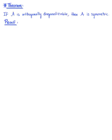This next theorem is going to help us identify the conditions under which a matrix is orthogonally diagonalizable. This theorem tells us that if matrix A is orthogonally diagonalizable, then matrix A is symmetric.